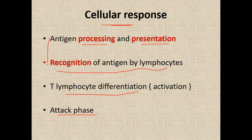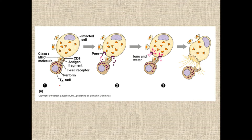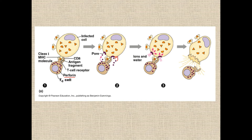This photograph explains how the cytotoxic T cell kills the infected cell or bacterial cell with perforin mediated killing. The T cell has perforin vesicles containing the chemical perforin. The T cell releases perforin near the infected cell, and perforin forms holes in the cell membrane of the infected cell. Ions and water enter the infected cell via these pores and the cell bursts. This is known as perforin mediated killing of the infected cell by the cytotoxic T cell.